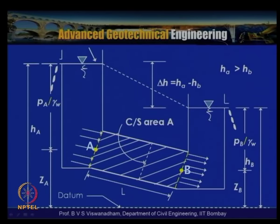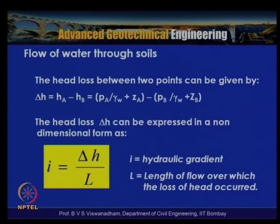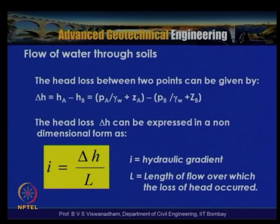The head loss between two points A and B is Δh = h_a – h_b = (p_a/γ_w + z_a) – (p_b/γ_w + z_b). The hydraulic gradient i is the non-dimensional form defined as i = Δh / L, where L is the length over which the head loss occurs. The cross-sectional area A is perpendicular to the flow direction, and the flow volume is A × L.